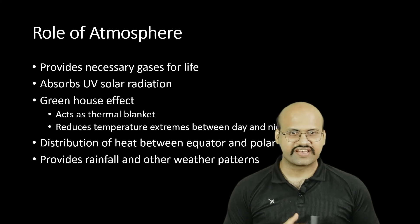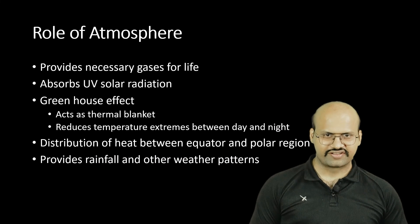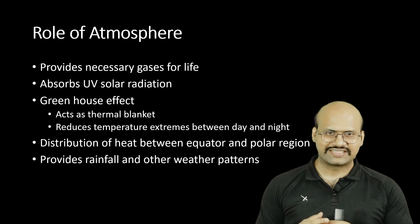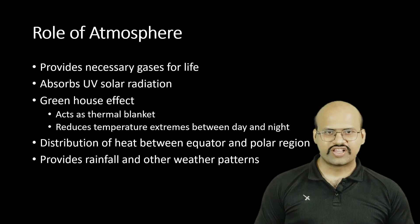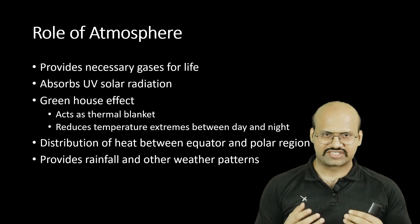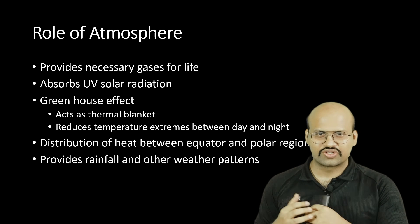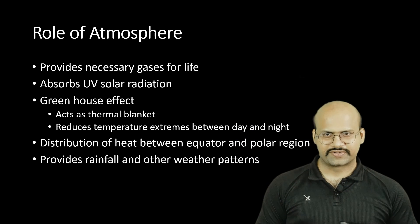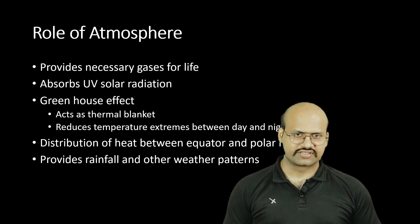These gases also play an important role in the distribution of heat between the equator and polar regions. Heat from the sun mainly reaches the equatorial region because that region faces the sun directly, so there is an abundance of heat there, while polar regions do not receive as much heat. Therefore, it is necessary for heat from the equator to be passed on to the polar regions, and atmospheric gases serve this purpose. The atmospheric gases also help in providing rainfall, which is very essential for life on Earth.